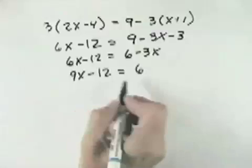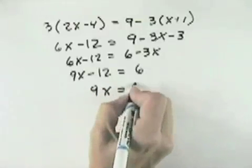And to get the x term by itself, I'm going to add 12 to both sides, so I can see 9x equals 18.